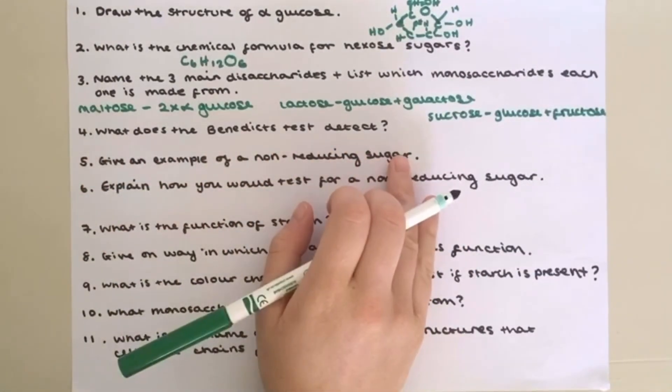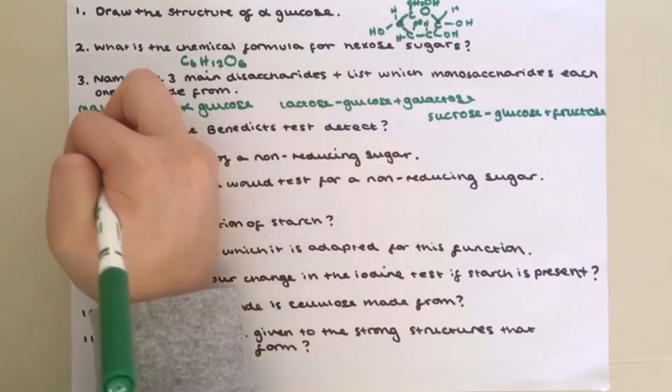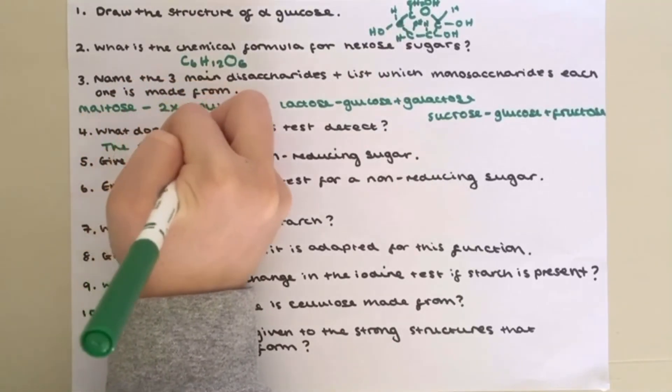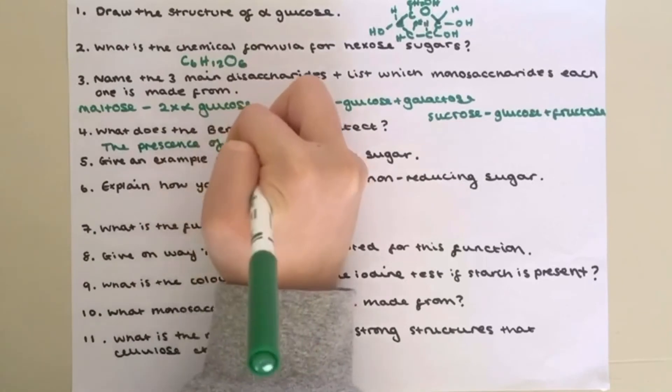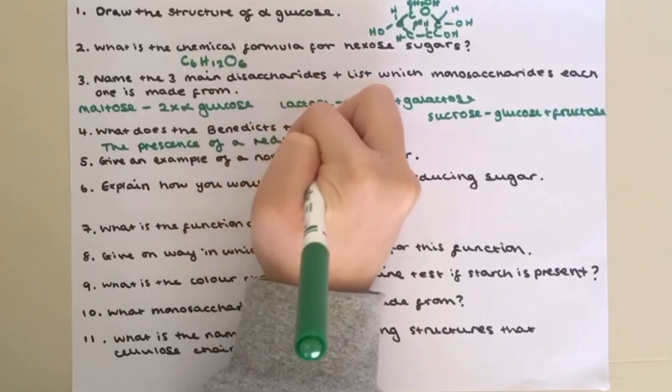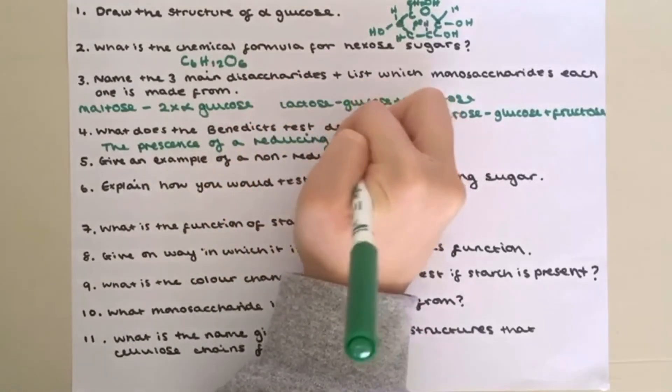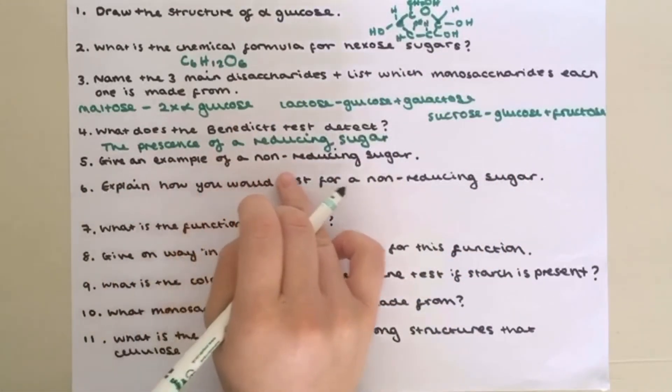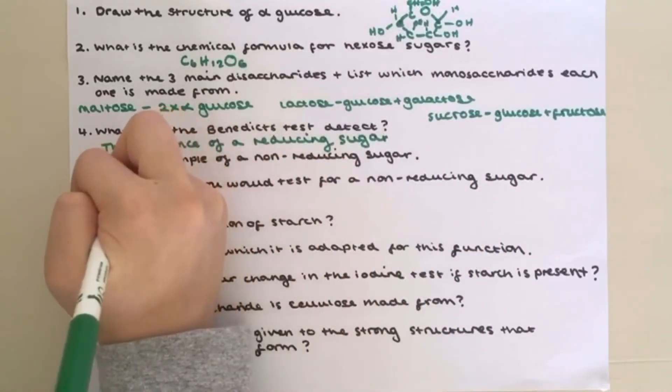Question 4, what does the Benedict's test detect? It detects for the presence of a reducing sugar, for example monosaccharides. Question number 5, give an example of a non-reducing sugar, sucrose.